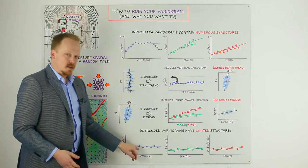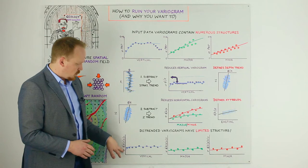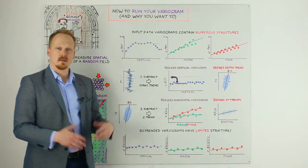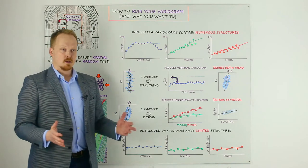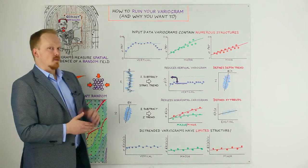Your nugget and your sill is almost identical. That means that the observational point has just as much information immediately as it does at some great distance. That's great. You no longer need a variogram. You have done it instead with trends.